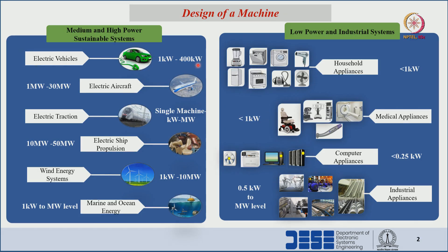Looking at different applications, for medium and high power applications such as sustainable systems, electric vehicles, aircraft, traction, ship propulsion, wind energy systems, marine and ocean energy systems, and hydro power systems, the power level ranges from 1 kilowatt to megawatt level. Similarly, low power and industrial systems also utilize electrical machines from tens of watts up to megawatt level.